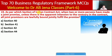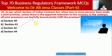Next MCQ: as per which section of the Indian Contract Act, when two or more persons have made a joint promise, unless there is apparent intention to the contrary, all joint promisors are lawfully bound to jointly fulfill the promise? Whether Section 40, 41, 42, or 44. Here C is the right option — Section 42 of the Indian Contract Act is applicable.